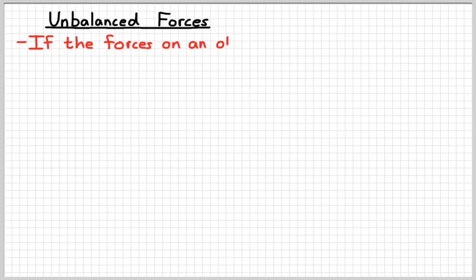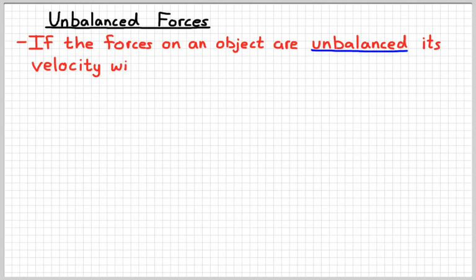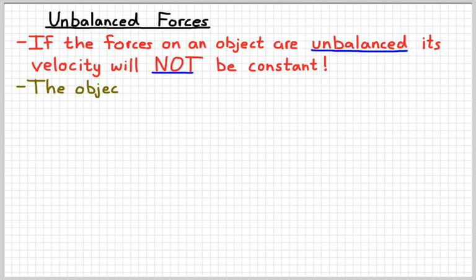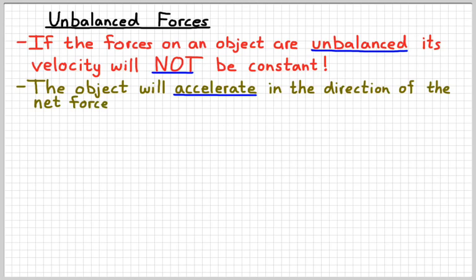So what's new today? In this video, we're going to study unbalanced forces. If the forces on an object are not balanced — or 'unbalanced' would be the fancy word — then its velocity is not going to be constant; it's going to accelerate. More specifically, the object is going to accelerate in the direction of the net force on it. That symbol here is the Greek letter sigma, and it means 'sum of.'